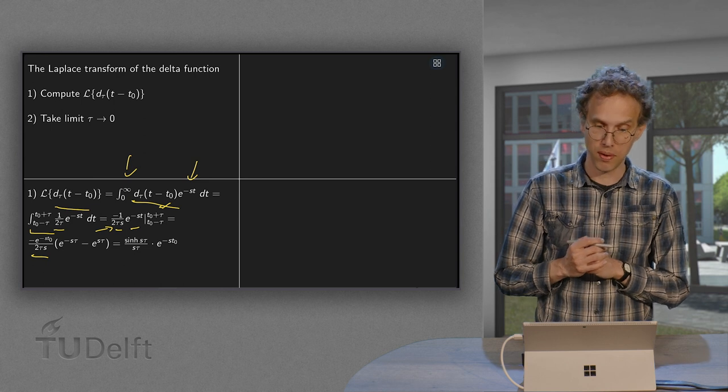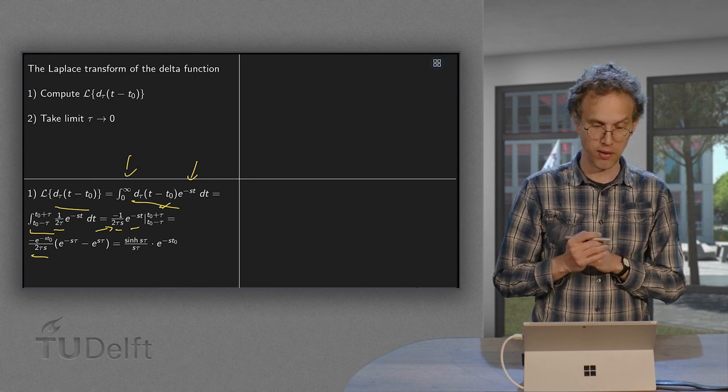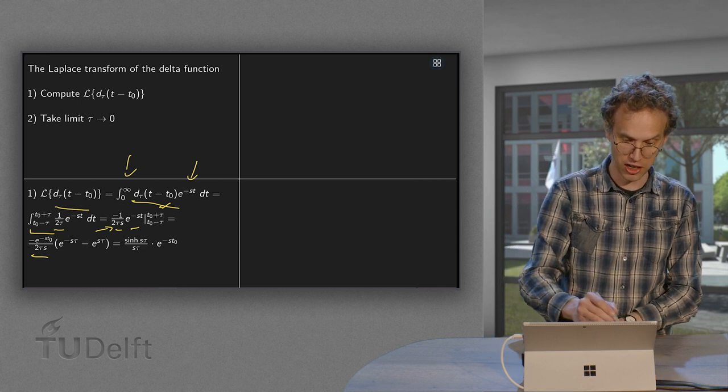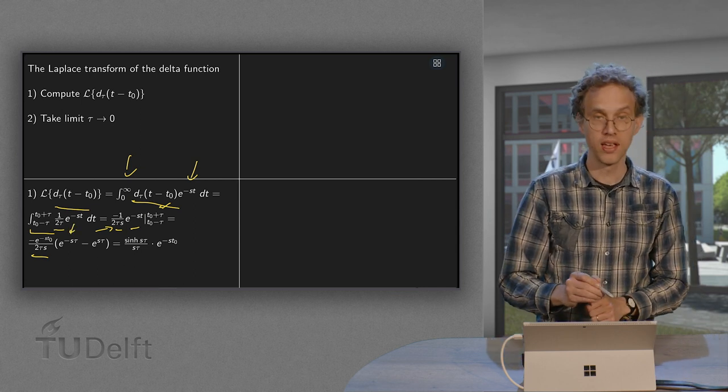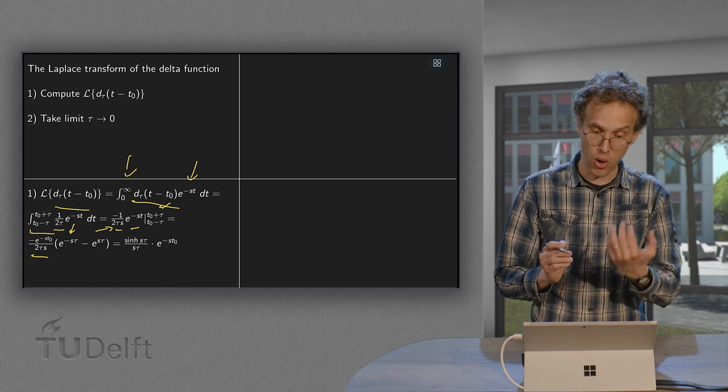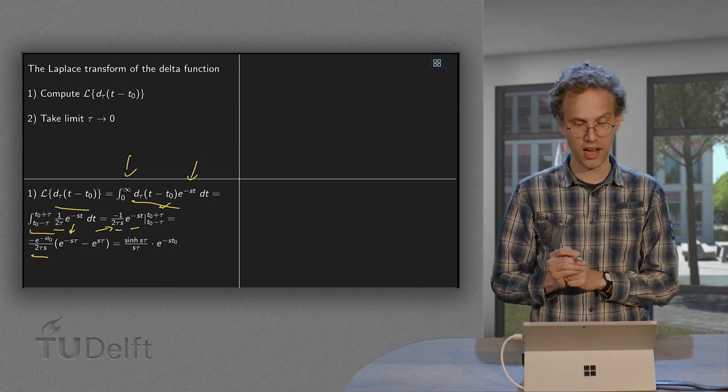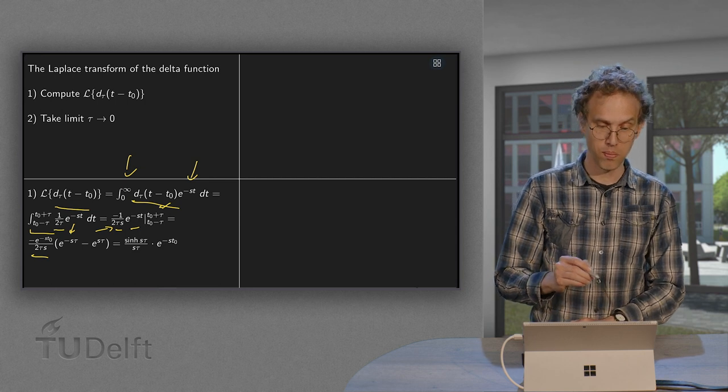Now on the upper boundary, we get an e to the power minus st₀ times e to the power minus sτ, which is over here. And on the lower boundary, we also get an e to the power minus st₀, I took it already out, times e to the power plus sτ.